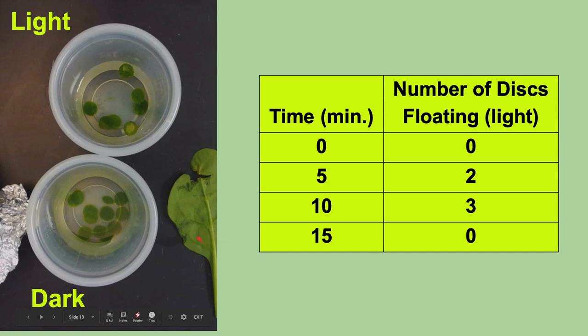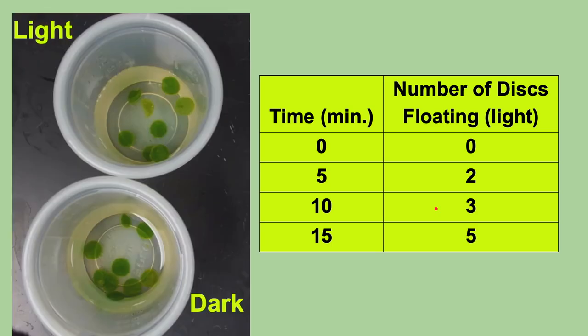And wow, what happens? Now we have three disks floating. You can count them - one, two, three. And in the dark, there's still none. We peeked in, we don't see anything floating. We record that in our data table. And then what's going to happen is after 15 minutes, we have five disks floating.